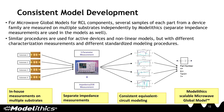All Model Ethics models go through a consistent model development process. For microwave global models, several samples of each part from the device family are measured on multiple substrates independently by Model Ethics. All of our measurements are done in-house. In addition to the multiple substrate data, we also use separate impedance measurements for our RLC component models. These datasets are then combined to extract an equivalent circuit model to represent an entire component family. Similar procedures are used for active devices and nonlinear models, but different characterization measurements and standardized modeling procedures are required.